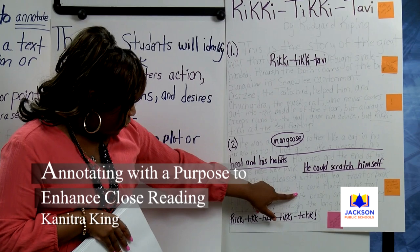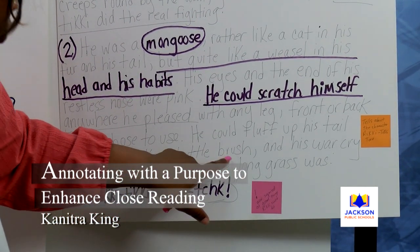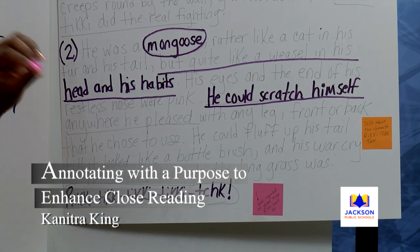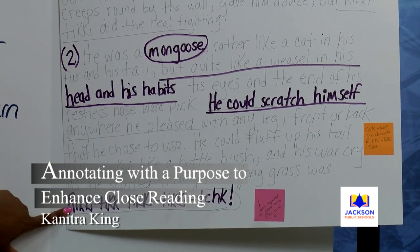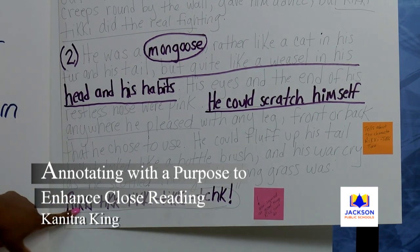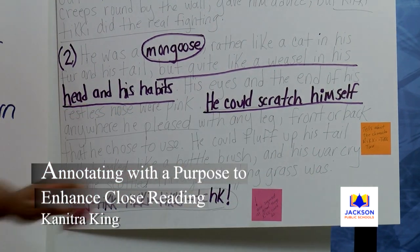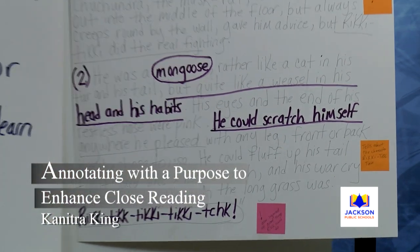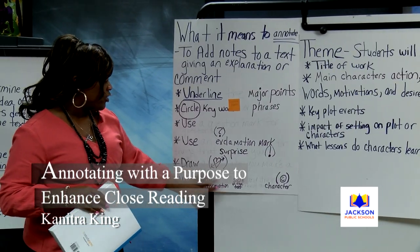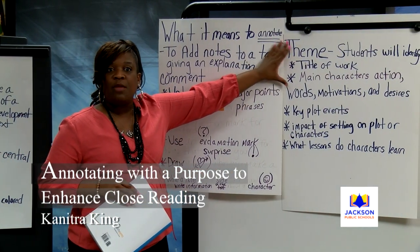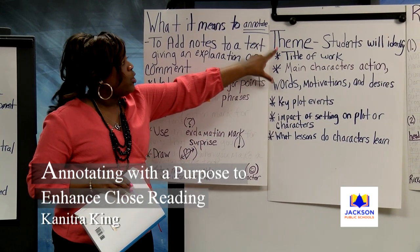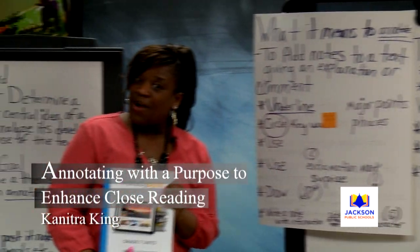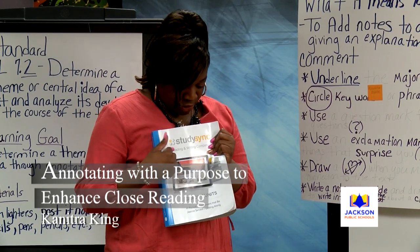Let's look at this part right here: he could fluff up his tail till he looked like a bottle brush, and his war cry. When we think of 'war cry,' we think of somebody who's been in battle, so this character has to be pretty brave — that's a character trait we could definitely give to Rikki-Tikki-Tavi. Then we get to the end where it talks about how he stretched across the grass and scuttled, making that sound as he moves through the grass. I put an exclamation mark here because I was thinking, wow, a mongoose is doing that? That was a surprise in the text for me. Every time you're reading your text, use your annotation marks. We're focusing on character because we want to look at what the theme is of that text.